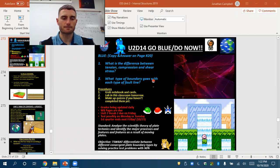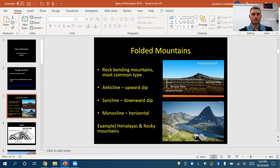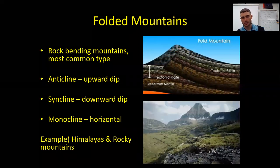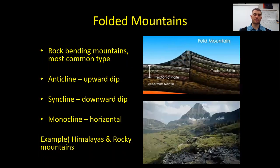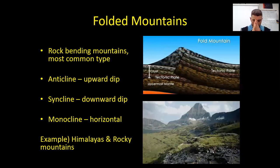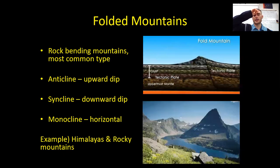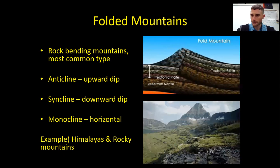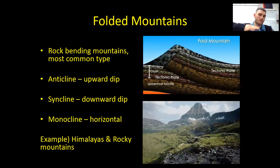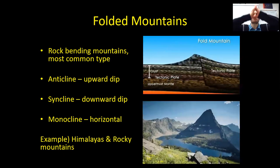Let's go over folded mountains. They are the rock-bending mountains and the most common type we have. The anticline is an upward dip, syncline is a downward dip, and a monocline is just a horizontal, straight-forward — not even a dip. These are all the different edges of mountains and how they move and change. Folded mountains form when two plates come together and neither one goes down — they both push up into the sky. Famous examples include the Himalayas and Rocky Mountains; Mount Everest is considered a folded mountain.